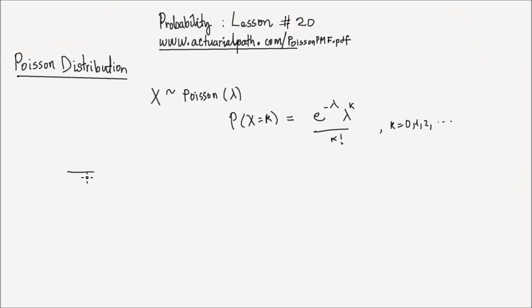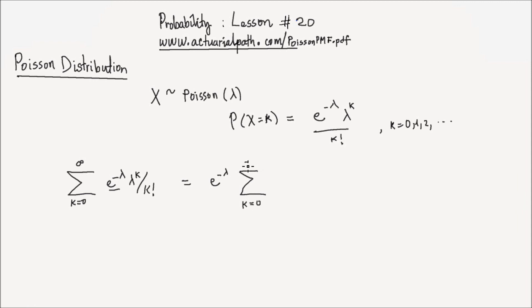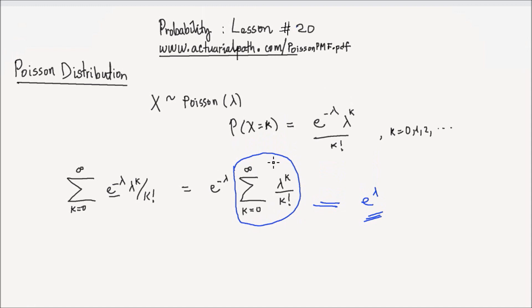If this is a valid PMF, we know it should satisfy the condition that the sum from k equals 0 to infinity of the PMF — which is e to the negative lambda times lambda to the power of k divided by k factorial — should be equal to 1. I can take out e to the negative lambda outside of the sum, giving e to the negative lambda times the sum from k equals 0 to infinity of lambda to the k divided by k factorial. This summation is actually equal to e to the lambda, because it is the Taylor series expansion of e to the lambda at 0.